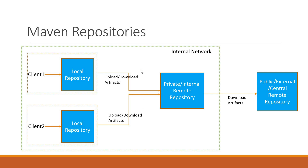So what are the types of remote repositories we have? We have two types: either a central or public remote repository, and a private or internal remote repository. By default, we don't have any private or internal remote repository — we have the public or external central remote repository. Whenever a client does not find the corresponding dependencies in the local repository, it will try to download them from the public or external central remote repository.